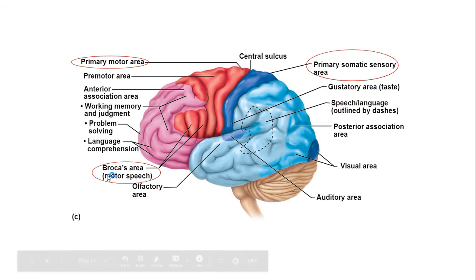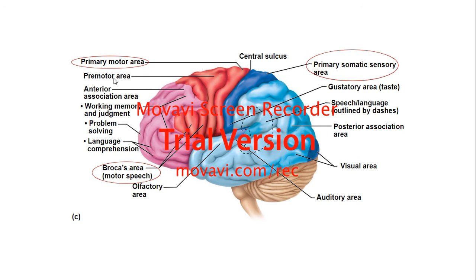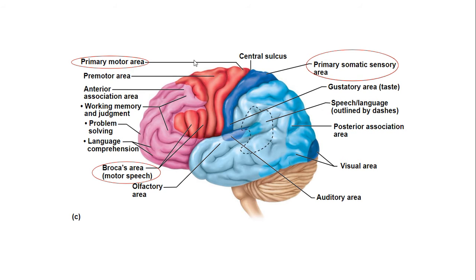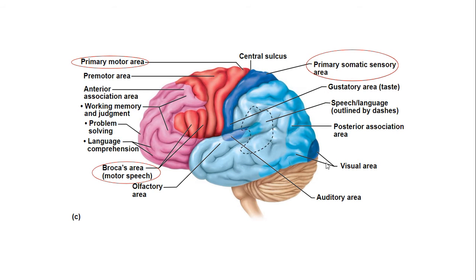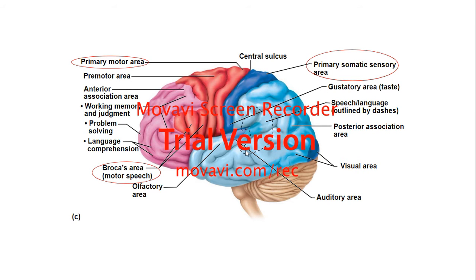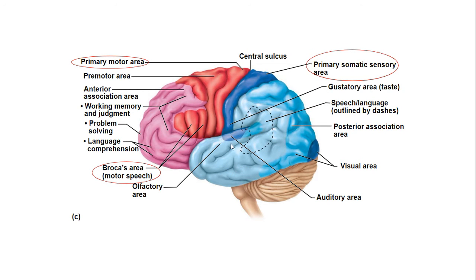In the diagram you can see the sulci dividing the lobes. The central sulcus divides the frontal lobe from the parietal lobe. In the frontal lobe you see the primary motor area and the Broca area for motor speech, both circled. The primary somatic sensory area is in the parietal lobe. The occipital lobe deals with visual processing, and the temporal lobe deals with the auditory area — hearing. The lateral sulcus separates the frontal lobe from the temporal lobe.